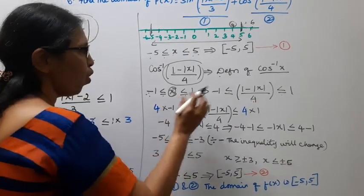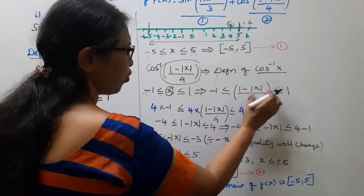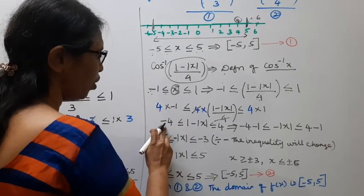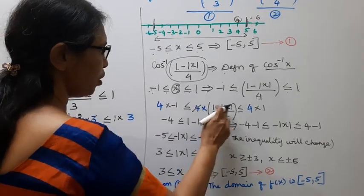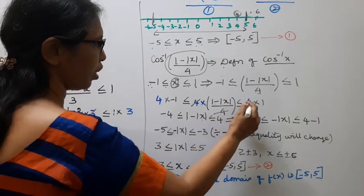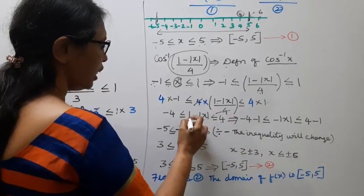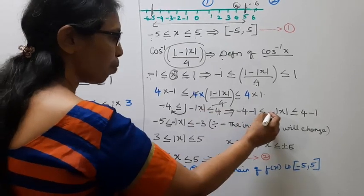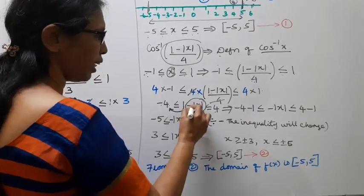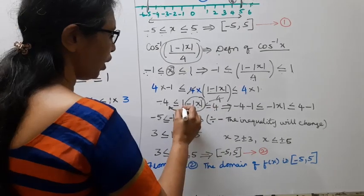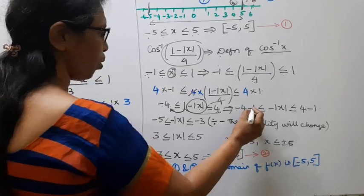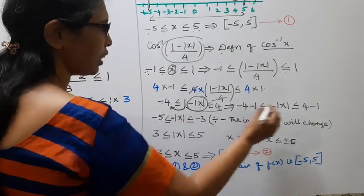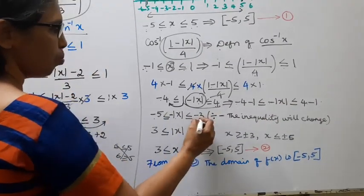Multiply throughout by 4. 4 into minus 1 gives minus 4, less than or equal to 1 minus mod x, less than or equal to 4. Subtracting 1 from all parts: minus 4 minus 1 gives minus 5, less than or equal to minus mod x, less than or equal to 4 minus 1, which is 3.